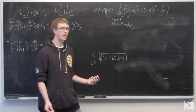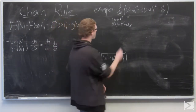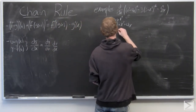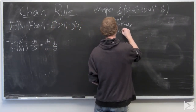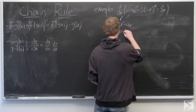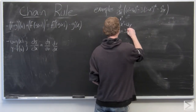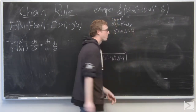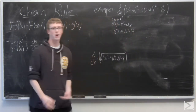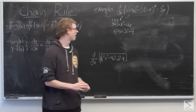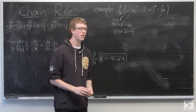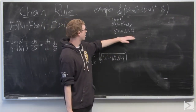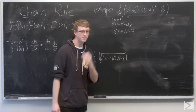So f of g of x would be x cubed plus 4x all squared. Let's take g prime of x first. By the power rule and rules of linearity, we're going to get 3x squared plus 4.